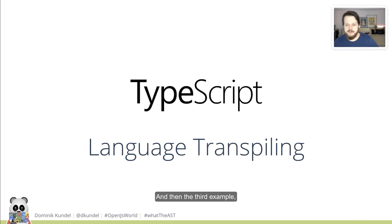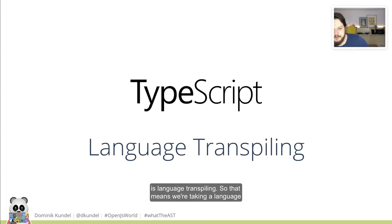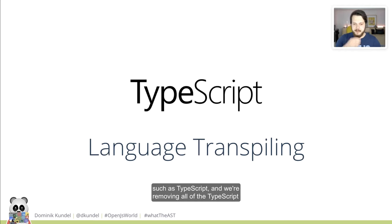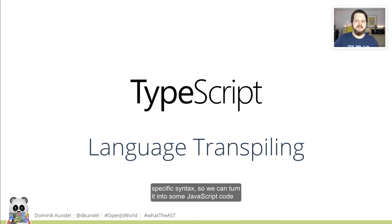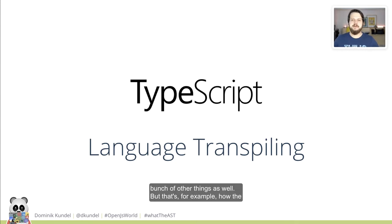The third example is language transpiling: taking a language such as TypeScript and removing all the TypeScript-specific syntax so we can turn it into JavaScript code that we can then execute. TypeScript does a bunch of other things as well, but that's, for example, how the Babel transform for TypeScript works.